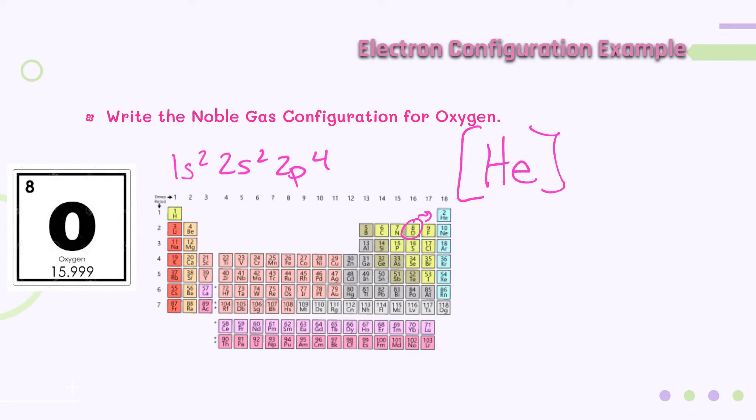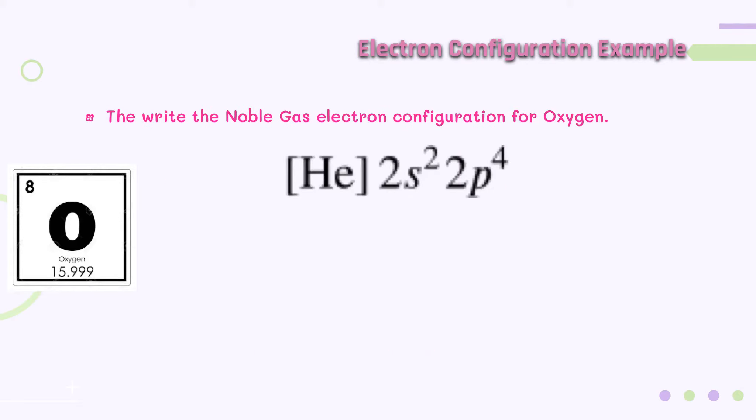Now, helium has an electron configuration of 1s2. So the rest for oxygen would be 2s2, 2p4. So here you can see that the noble gas configuration for oxygen is helium, 2s2, 2p4.